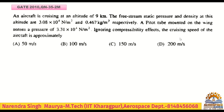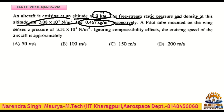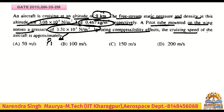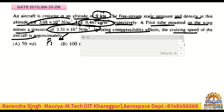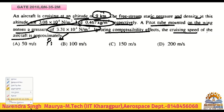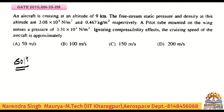This is question number 35, GATE 2010, for two marks. An aircraft is cruising at an altitude of 9 km. The free stream static pressure and density at this altitude are given. A pitot tube mounted on the wing senses a pressure. Ignoring compressibility effects, the cruising speed of the aircraft is approximately?